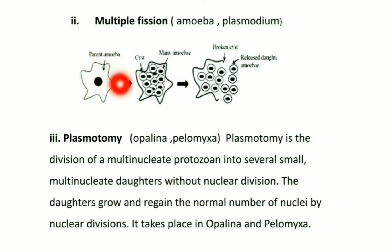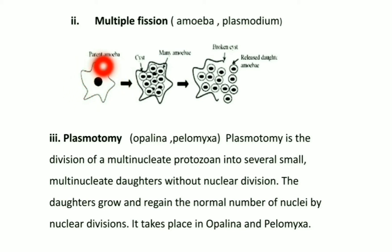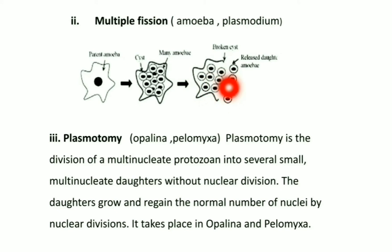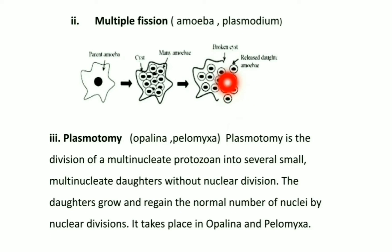In Amoeba, multiple fission occurs under unfavorable conditions. Under unfavorable conditions, a wall develops around Amoeba forming a cyst. The nucleus repeatedly divides, then the cytoplasm breaks and divides into a number of uninucleate daughter cells. When favorable conditions return, the cyst breaks open and these uninucleate daughter cells grow into new individuals.